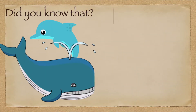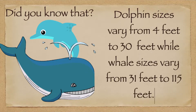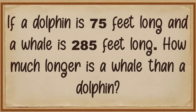Did you know that dolphin sizes vary from 4 feet to 30 feet, while whale sizes vary from 31 feet to 150 feet? If a dolphin is 75 feet long and a whale is 285 feet long, how much longer is a whale than a dolphin?